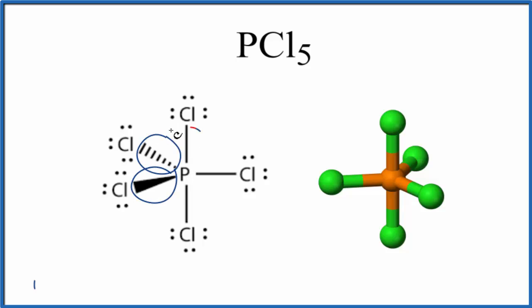So each one of these lines here, that's a single bond. It represents a pair of electrons shared between the phosphorus and the chlorine. There are two electrons that are shared between the phosphorus and the chlorine. That's our covalent bond.